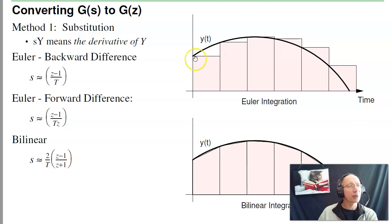There's actually two versions of Euler. There's forward difference, where I take this rectangle and draw it right, and backward difference, where I draw it left. All that means is the conversion from S to Z is s equals (z-1)/T or (z-1)/(Tz).